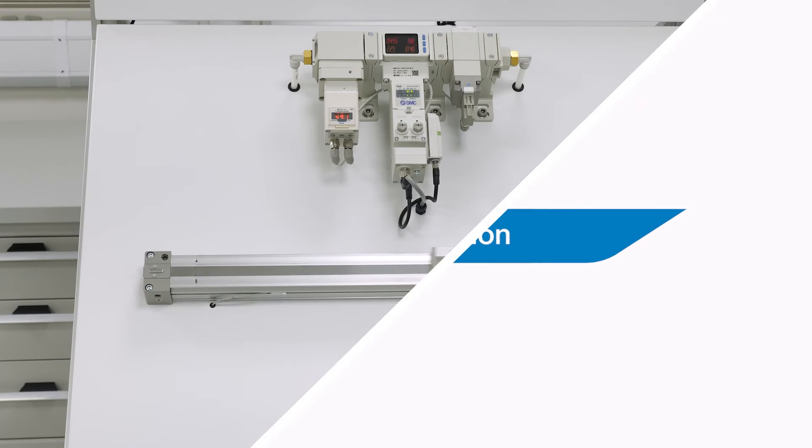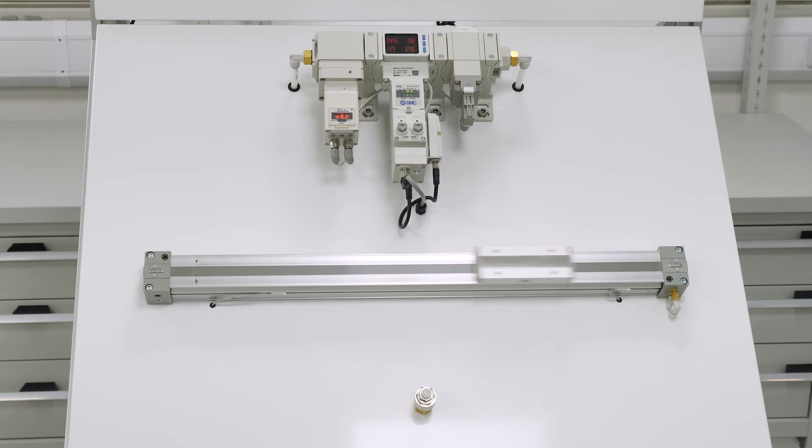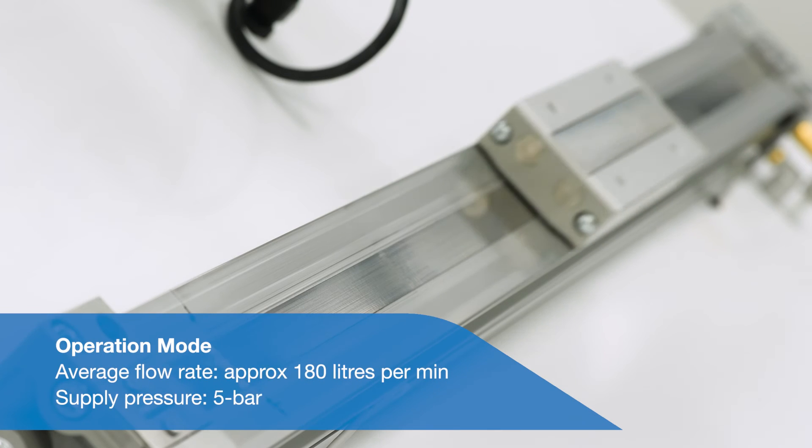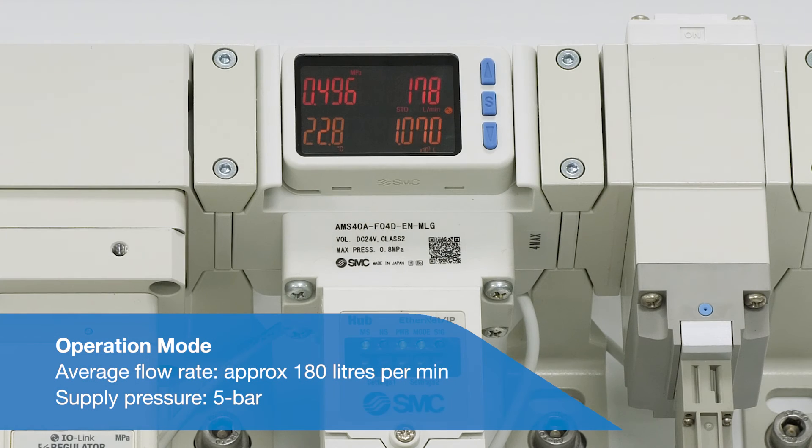We will now demonstrate the air management system functions with a practical example. Currently the machine, simulated here by a cylinder in continued operation, is in operation mode and the average flow rate is approximately 180 litres per minute and the supply pressure is 5 bar.